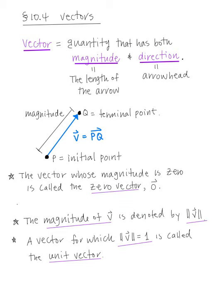So what is a vector? A vector is a quantity that has both magnitude and direction. Magnitude is nothing but the length of the arrow, and direction is the arrowhead. To describe a vector, we have an arrow where the starting point is called the initial point and the end point is called the terminal point. The magnitude will be the length of this vector.